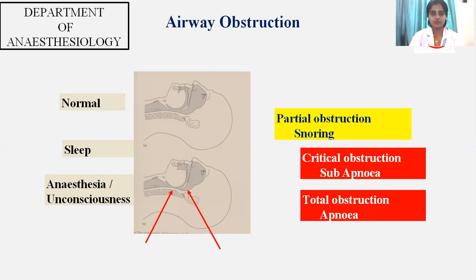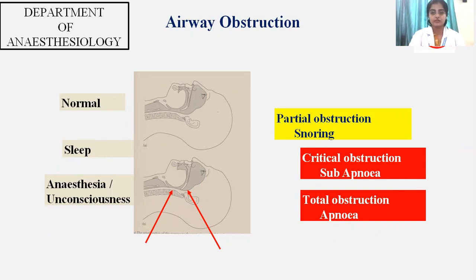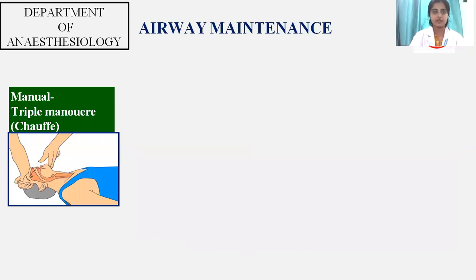Under normal circumstances when you are sleeping in a supine position, the soft palate is intact so you are able to breathe and relax. While sleeping, under anesthesia, or unconsciousness, there is partial obstruction which leads to snoring. In cases of hypopnea and apnea, there is critical obstruction and total obstruction that occurs when the soft palate or the uvula occludes the posterior pharyngeal wall, which can lead to hypopnea and apnea.